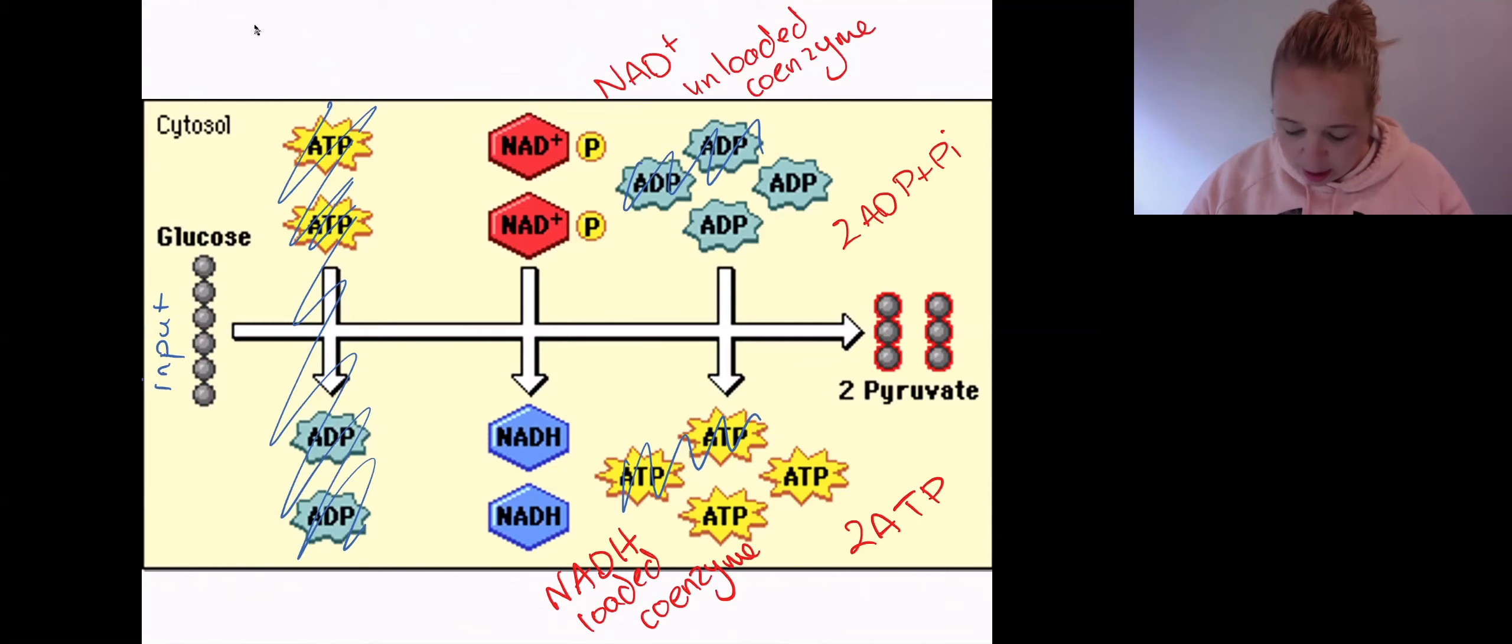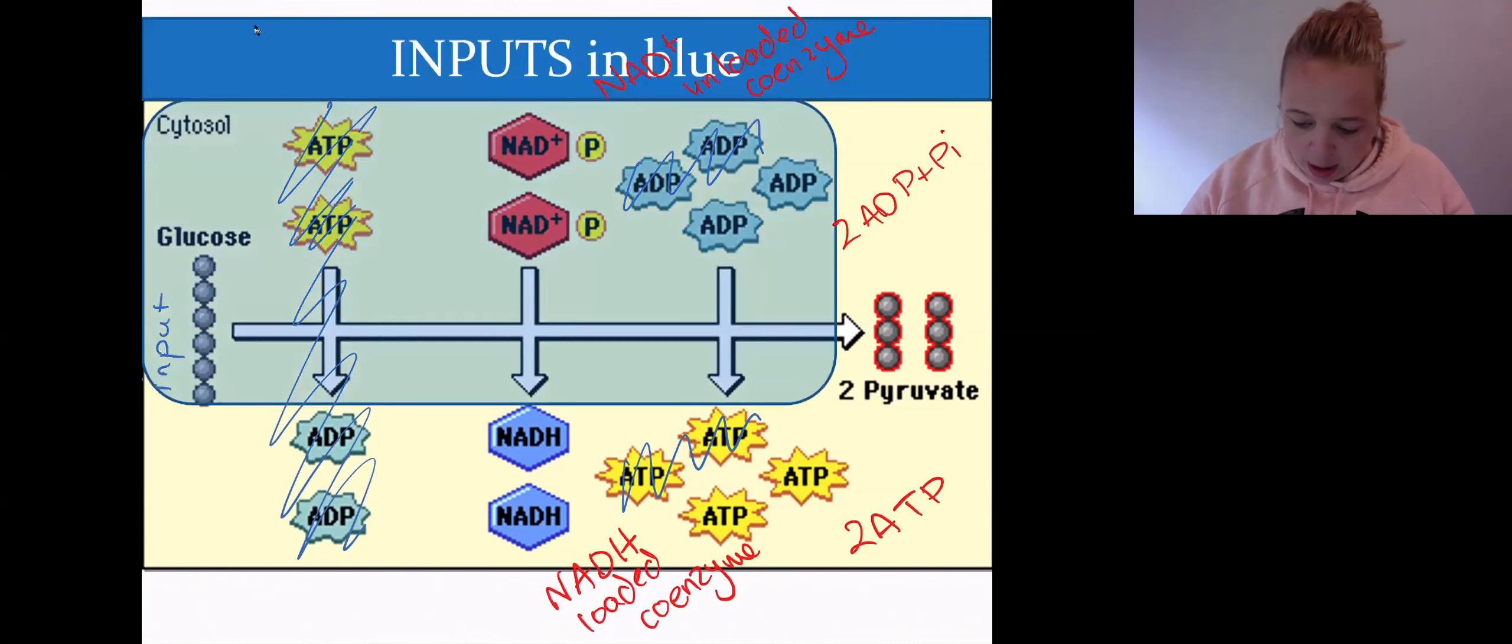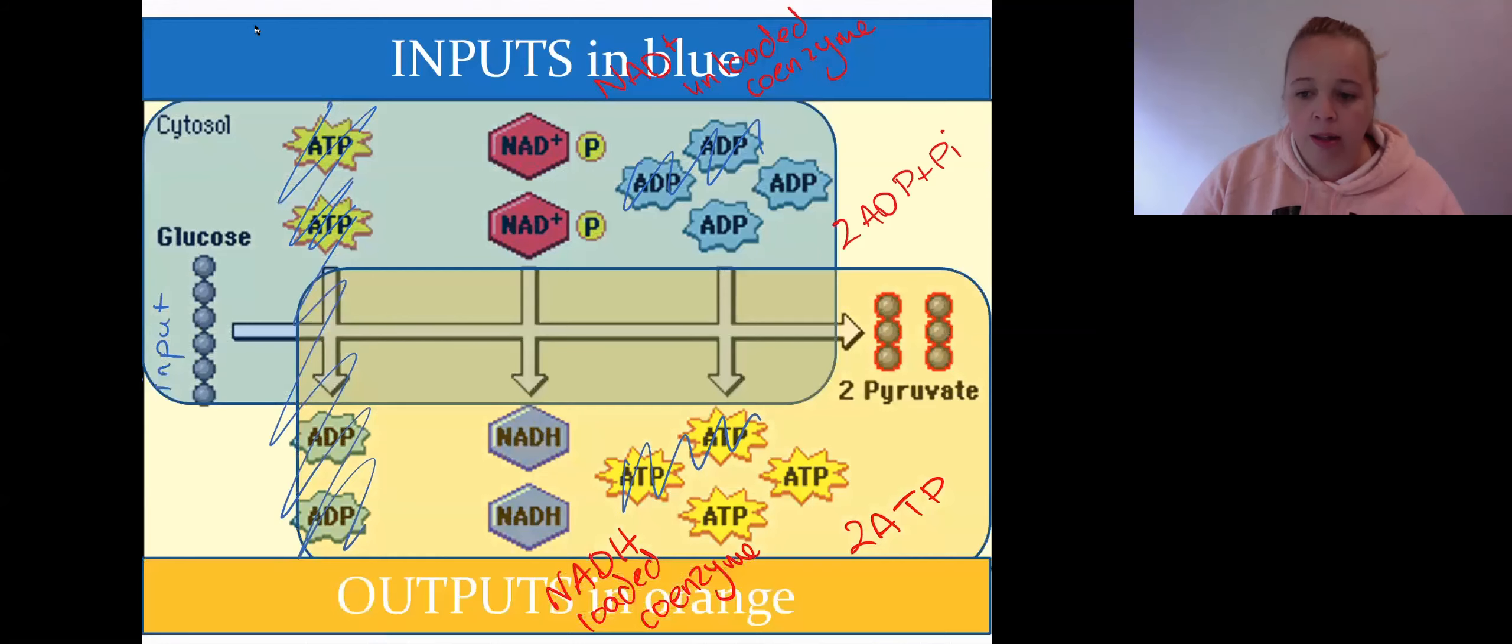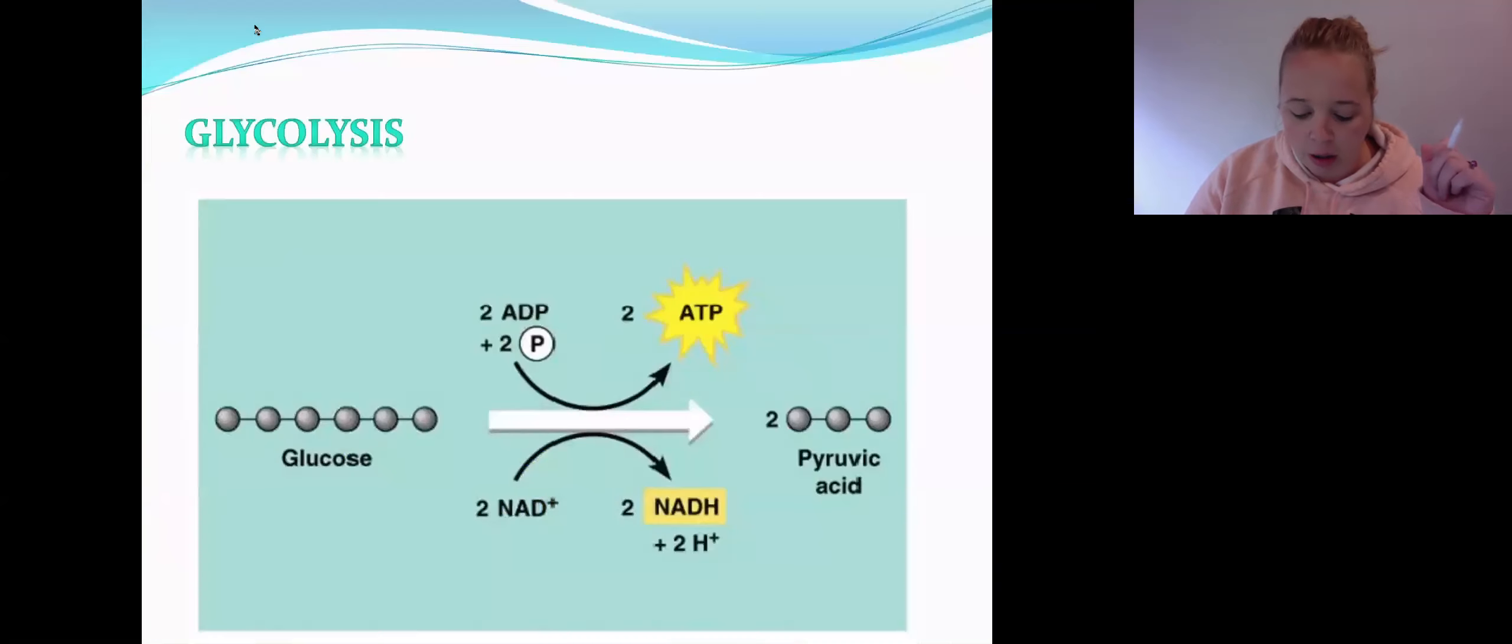So just to summarize that, you can see that inputs are in blue. So my inputs, and I'm going to summarize all this in a second, are one glucose, two NAD+, and two ADPs. And then what my outputs are, we end up with two pyruvate plus two ATP and two NADH. So we've got some loaded coenzymes.